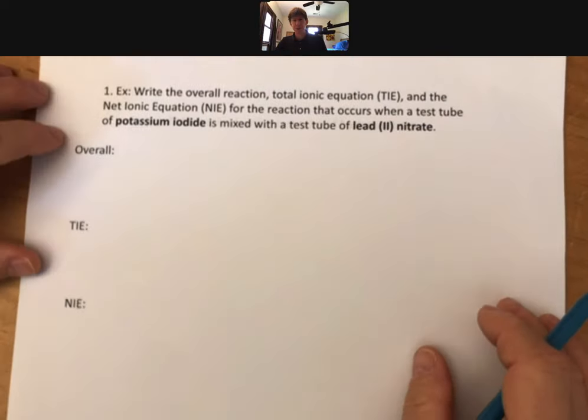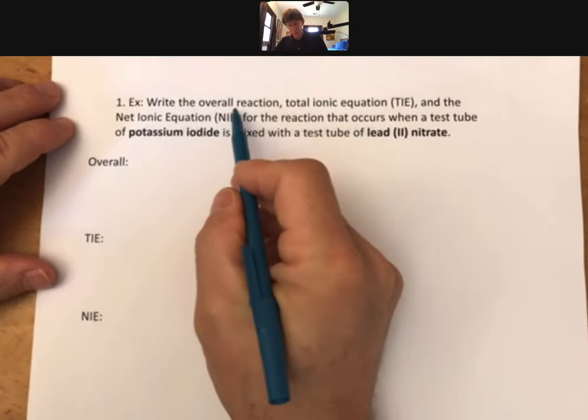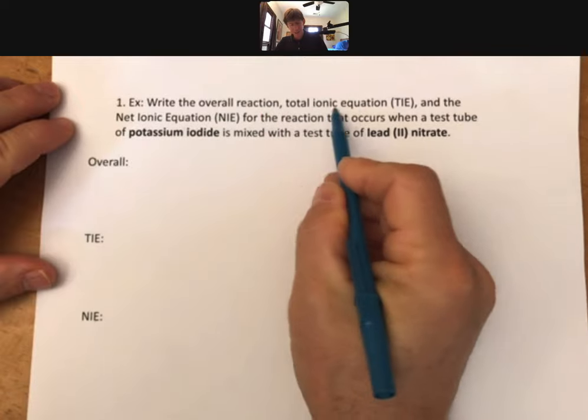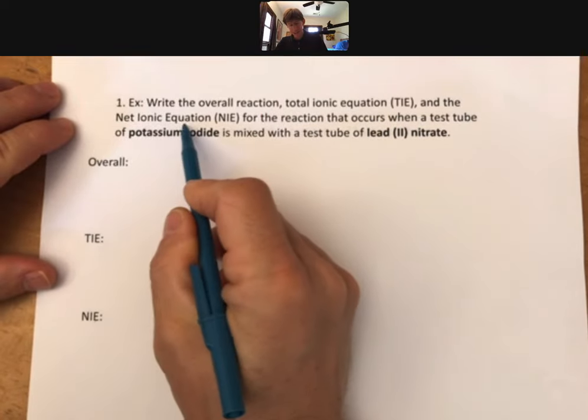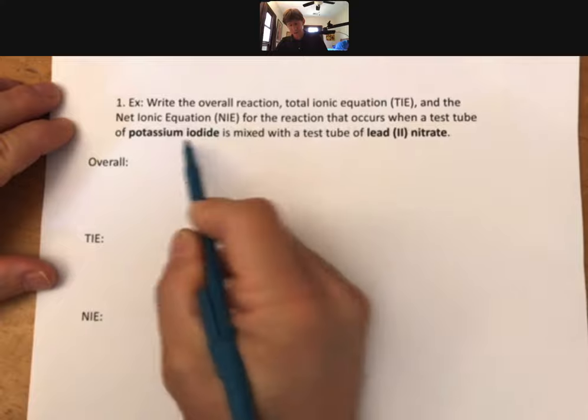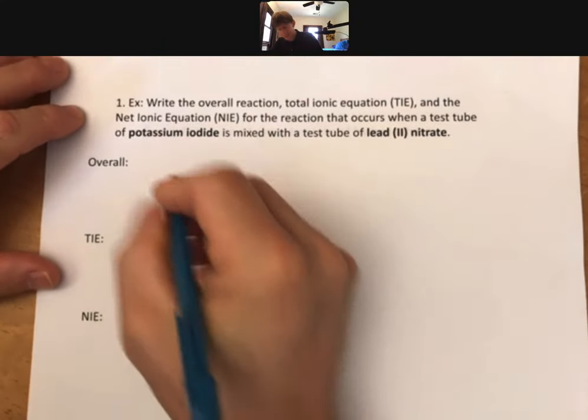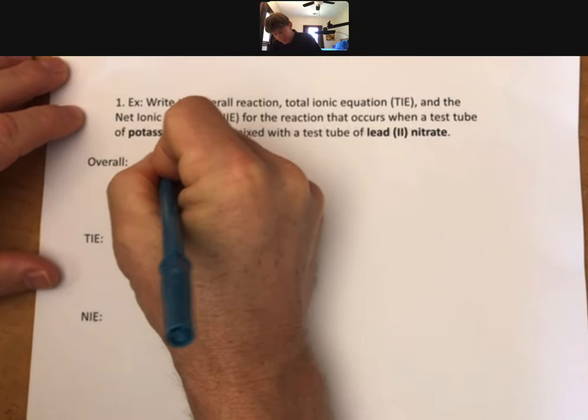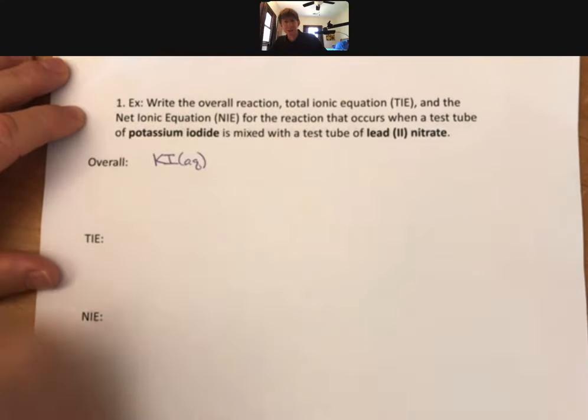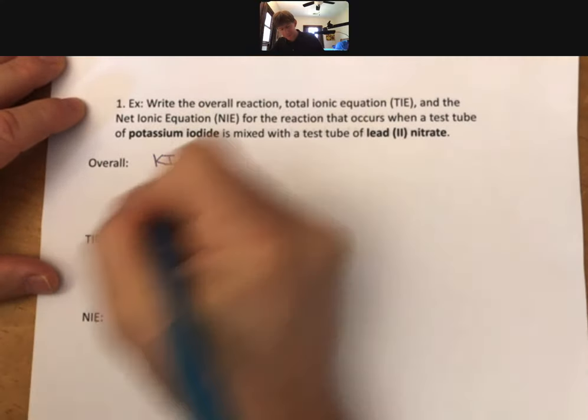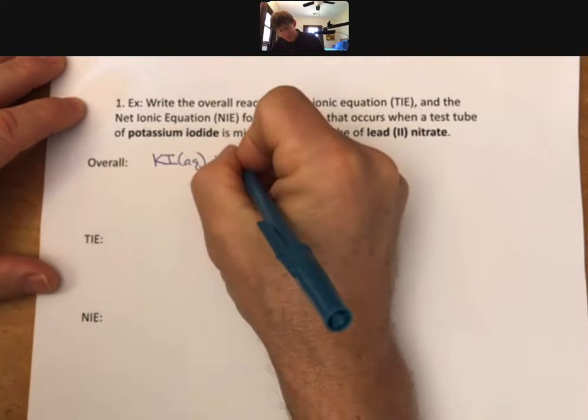Now what we're going to do is we're going to talk about how to write the overall reaction, the total ionic equation (TIE), and the net ionic equation (NIE) for the reaction that occurs for potassium iodide, which was aqueous - so these are the same two solutions from the last slide - plus lead(II) nitrate.